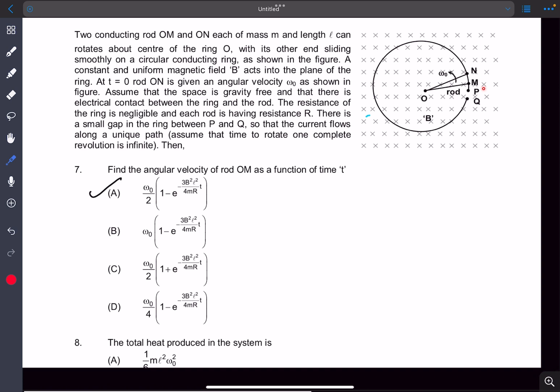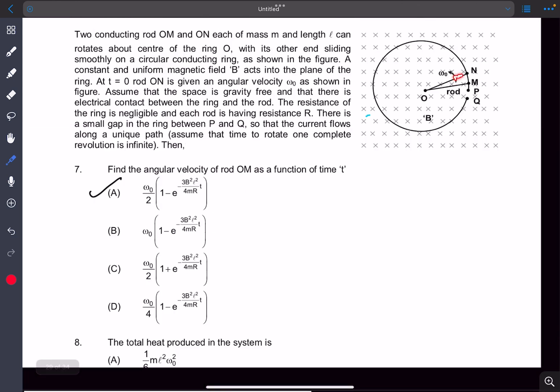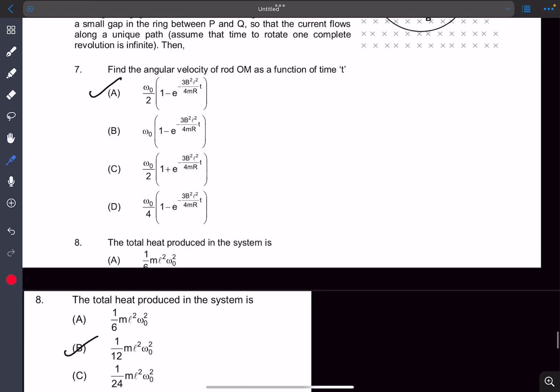The reason why there is a small gap here is to make sure that there is no current flowing in this loop. Induced current will only flow along in this loop. We have to find the angular velocity of this second rod OM as a function of time and also determine the heat produced in the system. As there are resistances here, there will be heat losses involved.